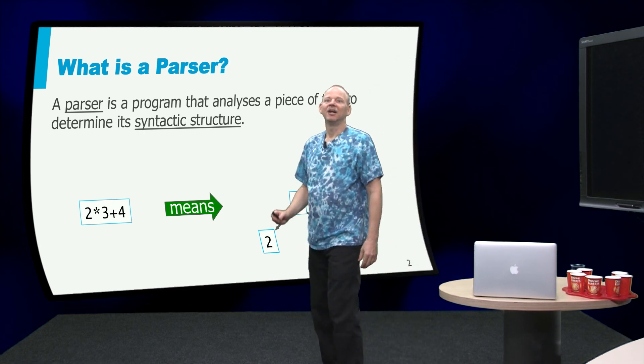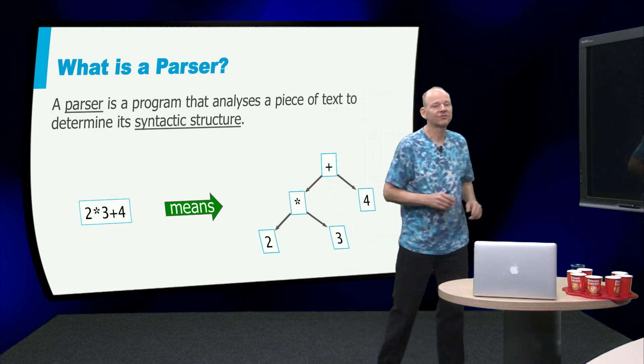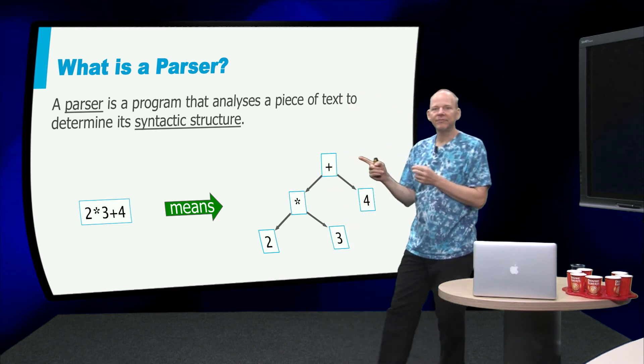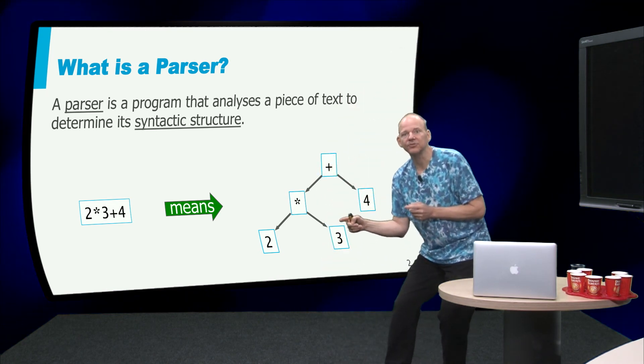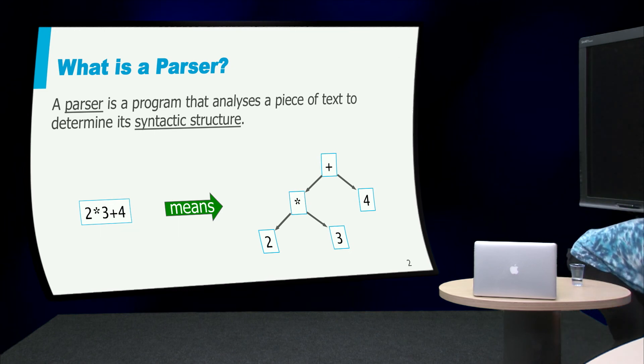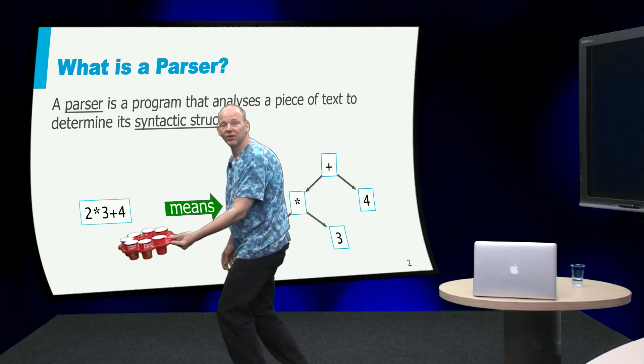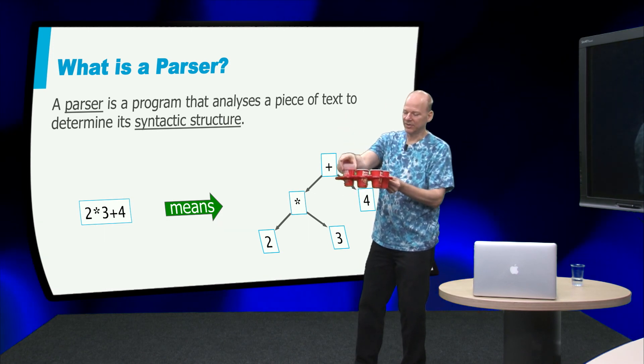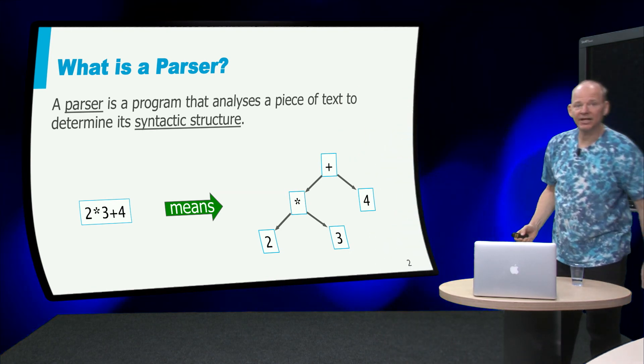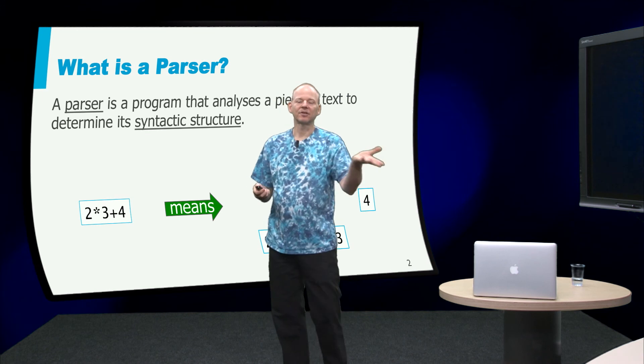What is a parser? A parser is a program that analyzes a piece of text to determine its syntactic structure. So if we start with 2 times 3 plus 4, what we want is we want to have this tree that says it is 2 times 3 plus 4. Here you see on the left, this is just an unstructured thing and then on the right, what we get is the real structure. So the thing on the left has no structure and the parser is trying to extract this structure from that string.